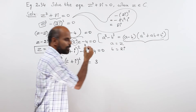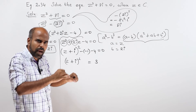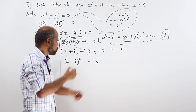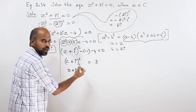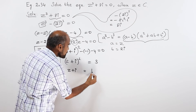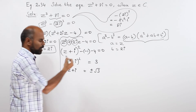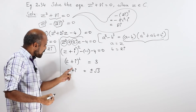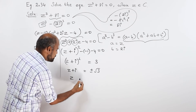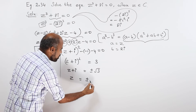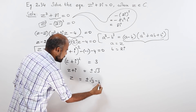Shifting: z plus i is equal to plus or minus square root of minus 3. So z equal to plus or minus root 3 minus i.